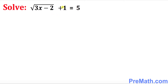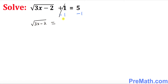First I want to get rid of this 1. I'm going to subtract 1 on both sides. This cancels out, so we get the square root of 3x minus 2 equals 5 minus 1, which equals 4.